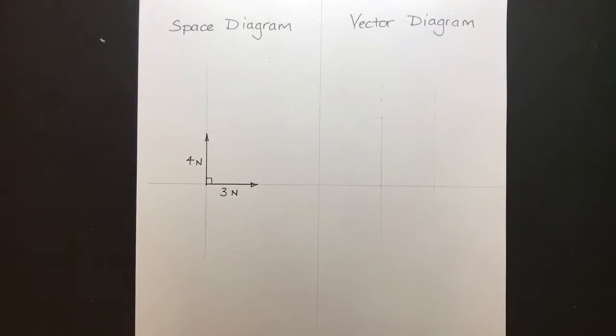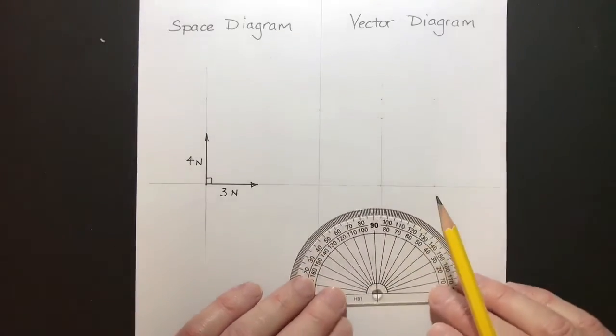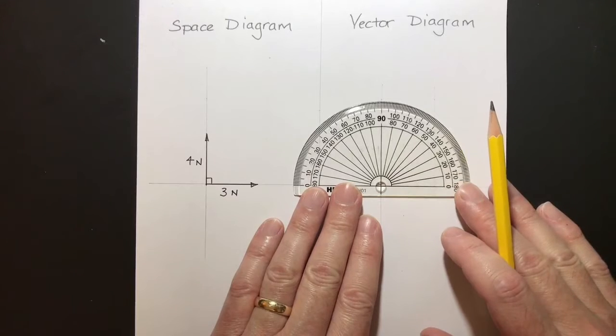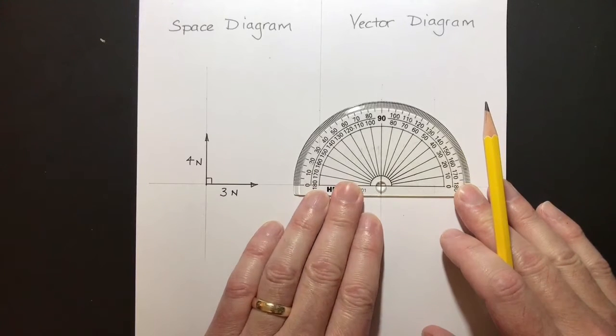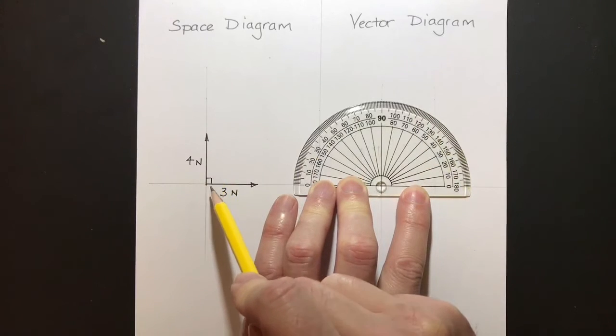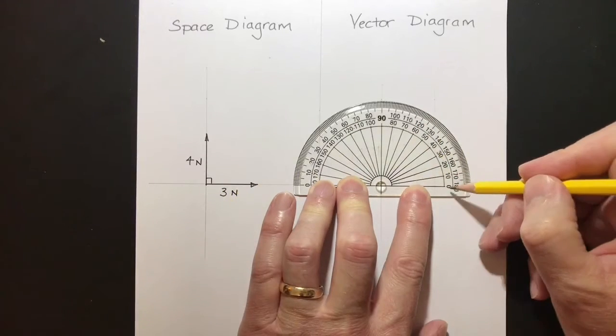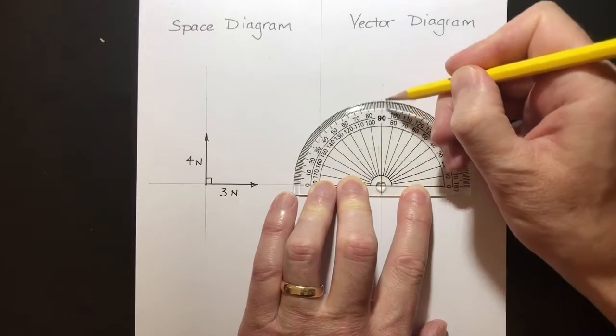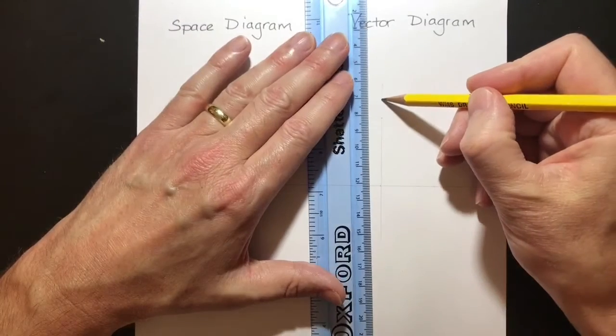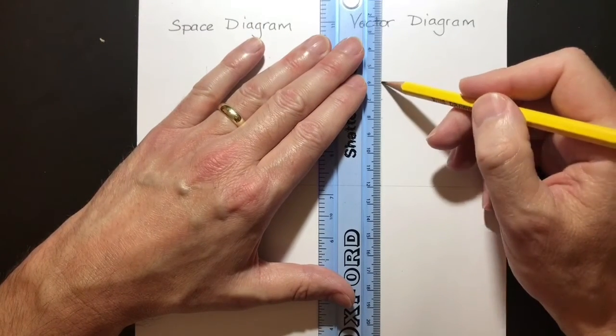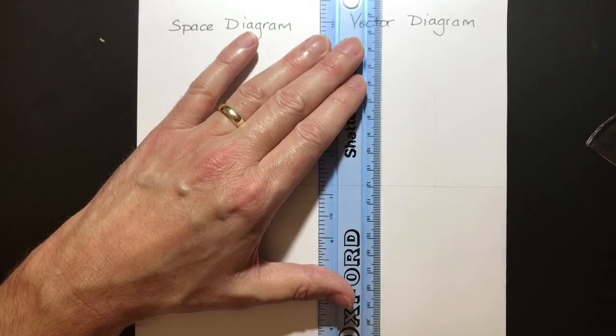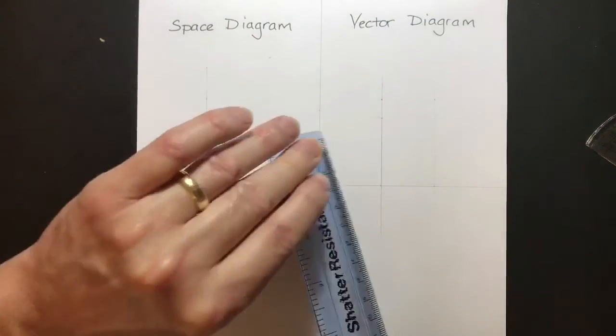Now, after I've done that, using faint lines at the moment, I can go to the start of that line and I can then put an outline in for the 4 Newton force, which is acting at 90 degrees. So I then go around here to 90 degrees. I put a little mark on the paper there and then I draw another faint line down through here. Draw it longer than it needs to be. And there we have our two faint lines.